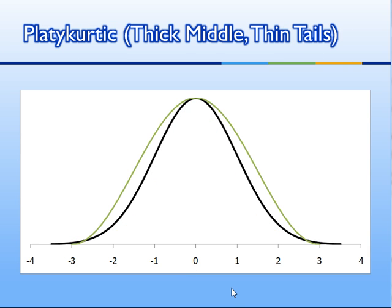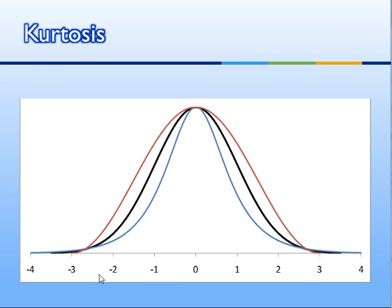A platykurtic distribution is thick in the middle, especially around the one standard deviation mark, and thin in the tails. That is, most of the scores are close to the mean and there are very few extreme scores. So leptokurtic means thin middle and thick tails — more extreme scores than in the normal curve — and platykurtic means thick middle and thin tails, not very many extreme scores compared to the normal curve.